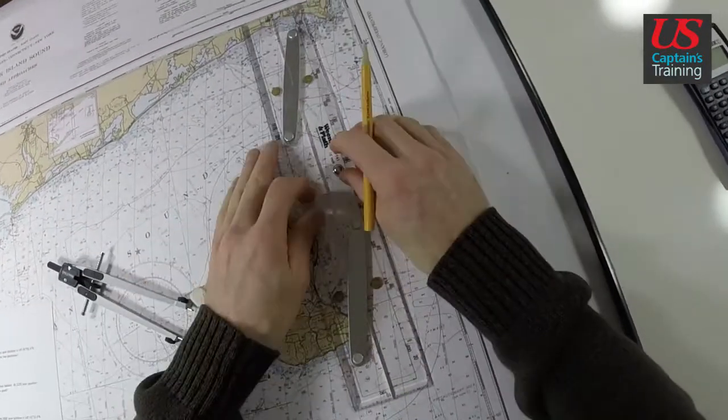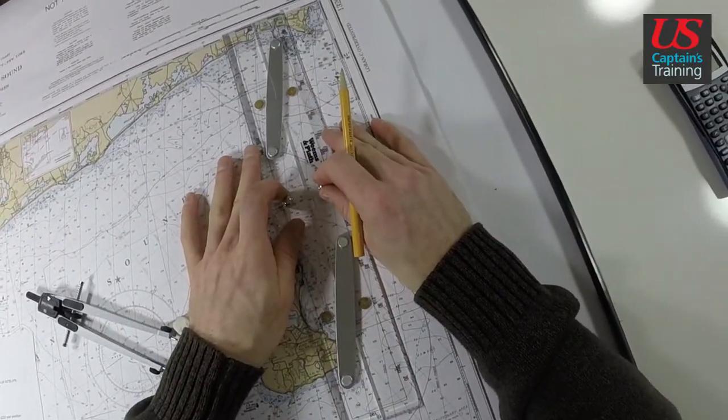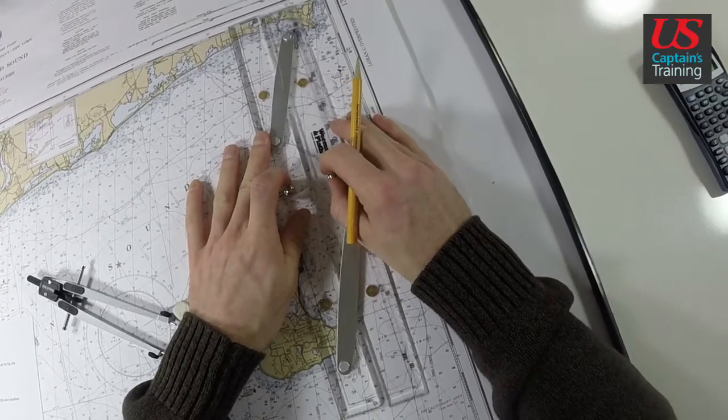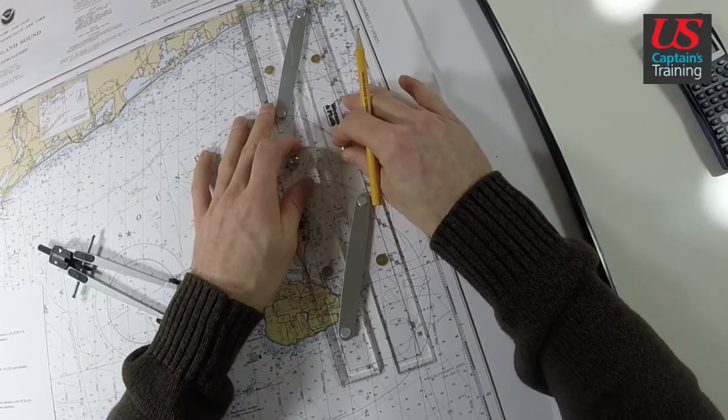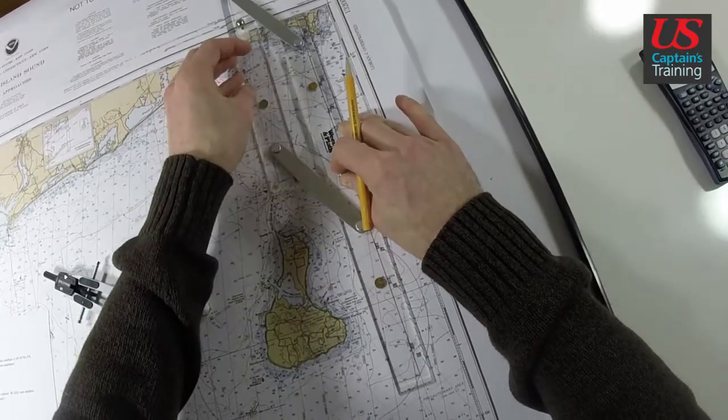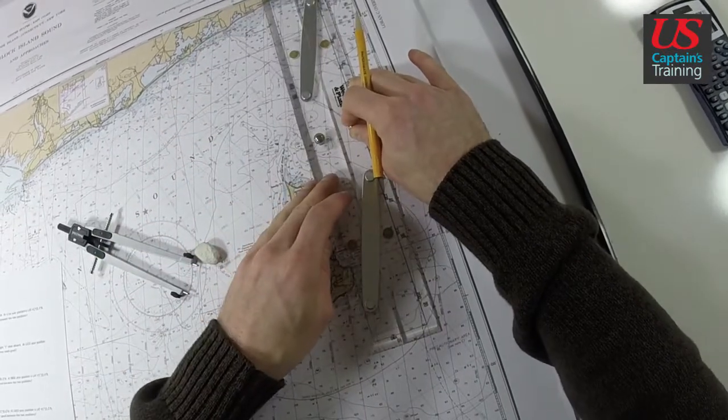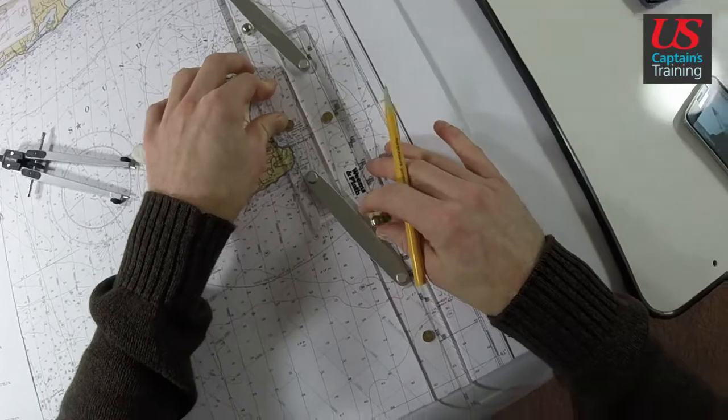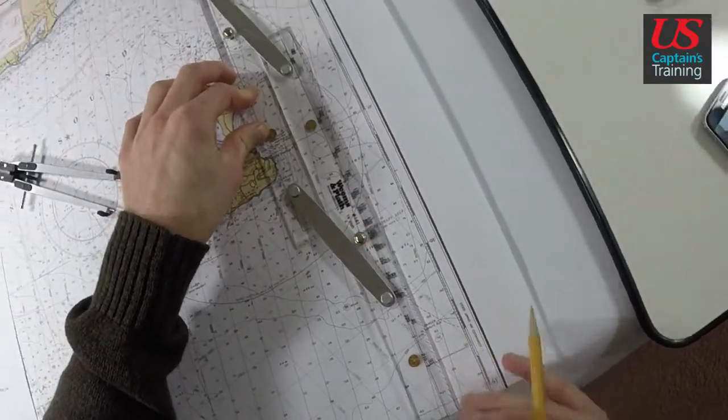Now if I were to try to take my parallel rules, I could do it. It'd be kind of tough. Line it up on a meridian, go 29.4, and now I have to do this crazy walk. This one, and there. I can get it. But an easier way...